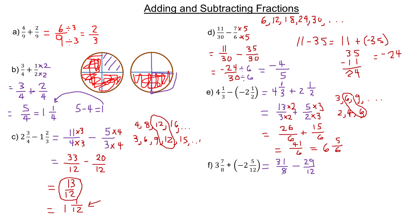We want to find the common denominator — eight and 12. Eight times 12 is 96, and 96 would be a common denominator, but there's a smaller denominator to work with. Listing multiples of eight: eight, sixteen, and adding eight more gives 24. The multiples of 12: twelve, and the second multiple is 24 — there's the common denominator, the first common multiple. So we should use 24.